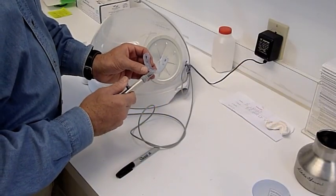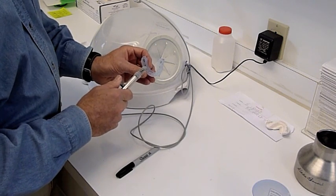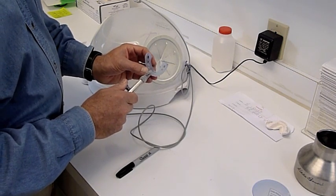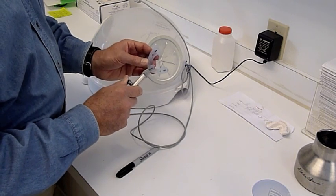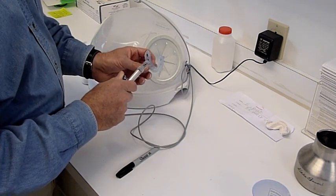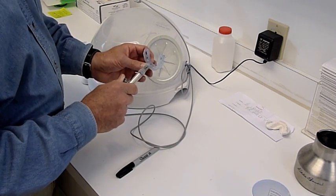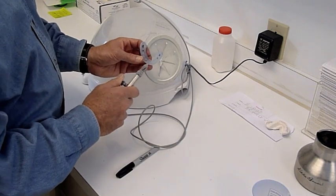I'm going to use our Danville air abrasion unit to remove the surface layer on the customized base on each one of the brackets. The metal brackets are a little bit more forgiving. You should be careful that we're only removing a small amount of material on the ceramic brackets because the bracket base has been prepared.